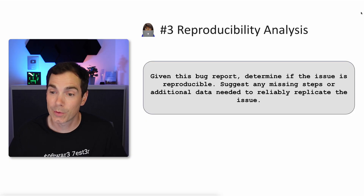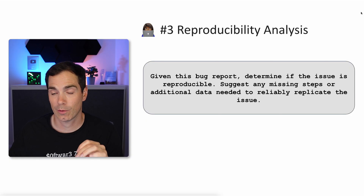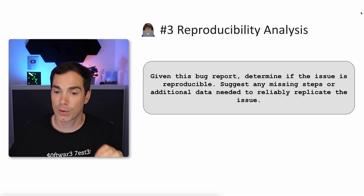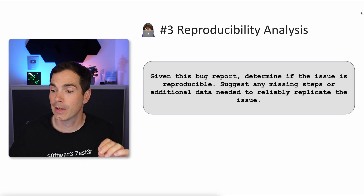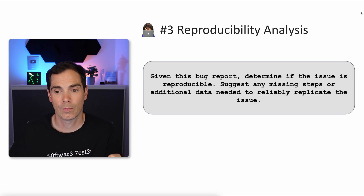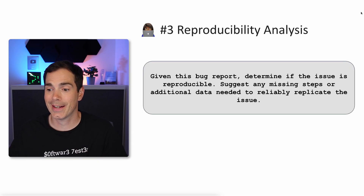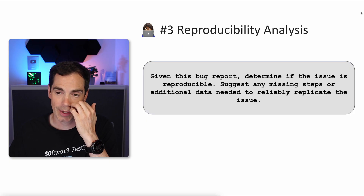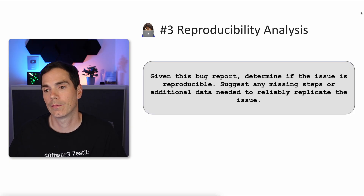Prompt three: reproducibility analysis. Given this bug report, determine if the issue is reproducible and suggest any missing steps or additional data needed to reliably replicate the issue. You describe the issue and the data you entered, and the LLM will help you suggest any missing steps that could go wrong.